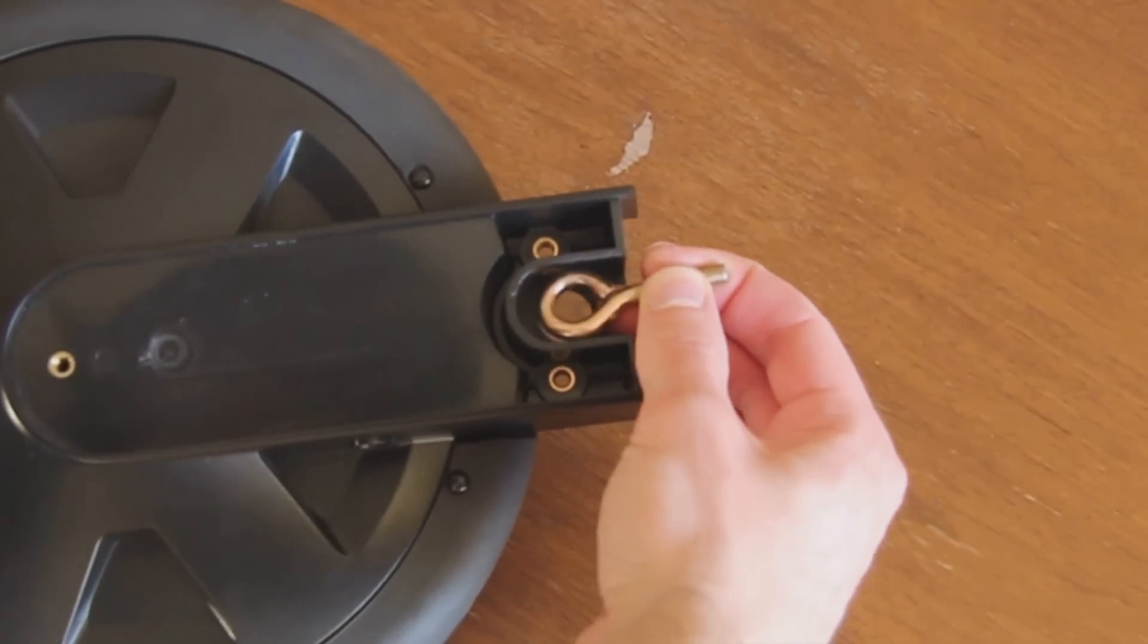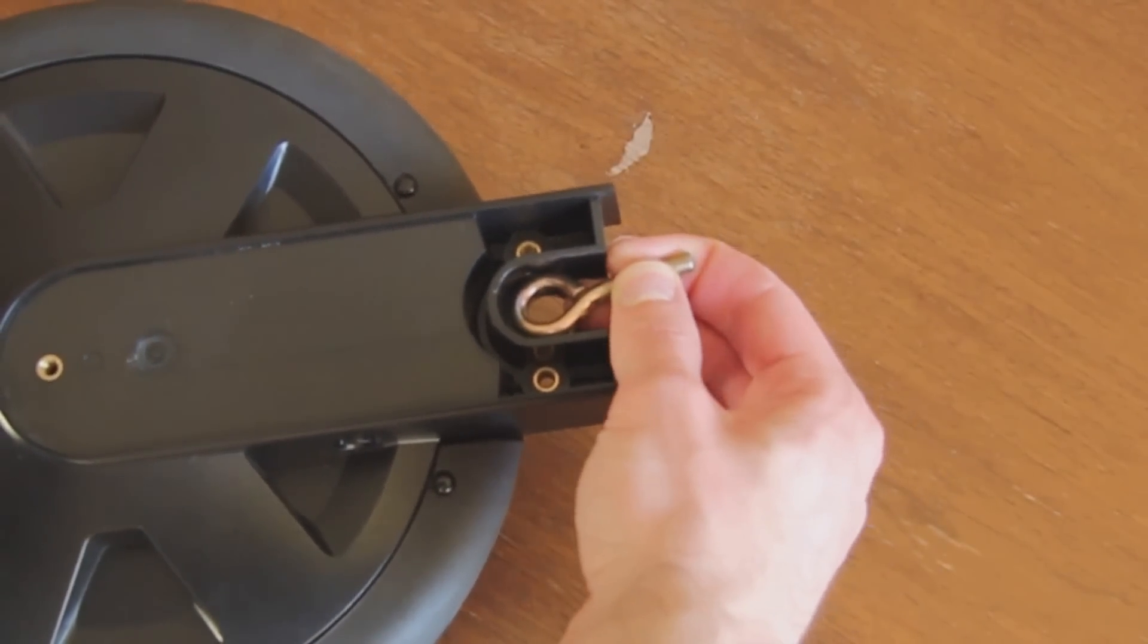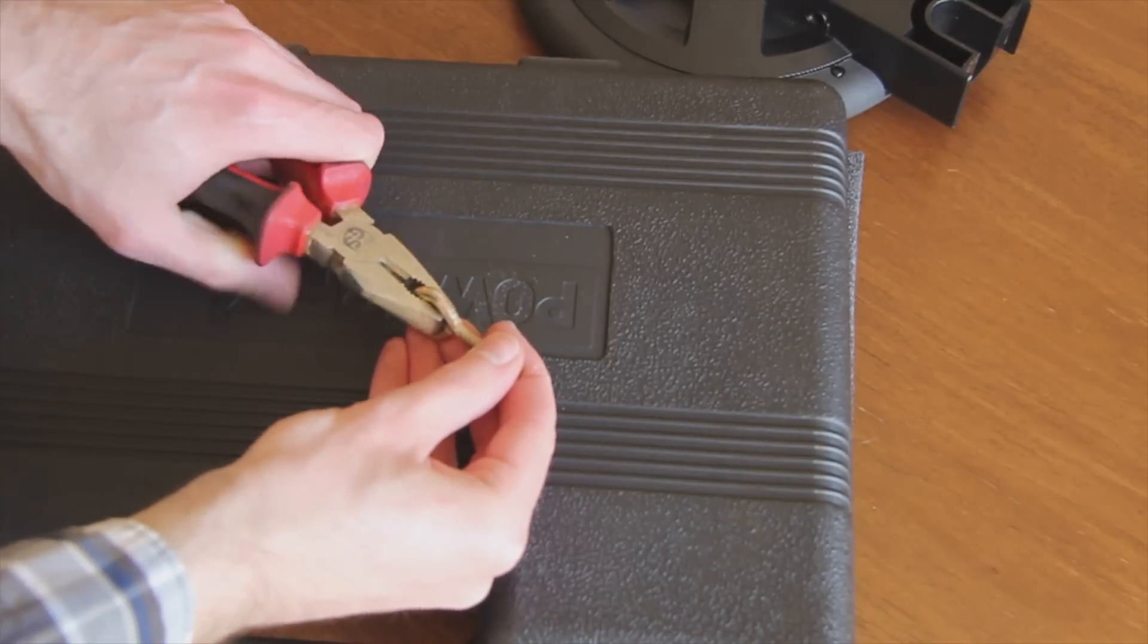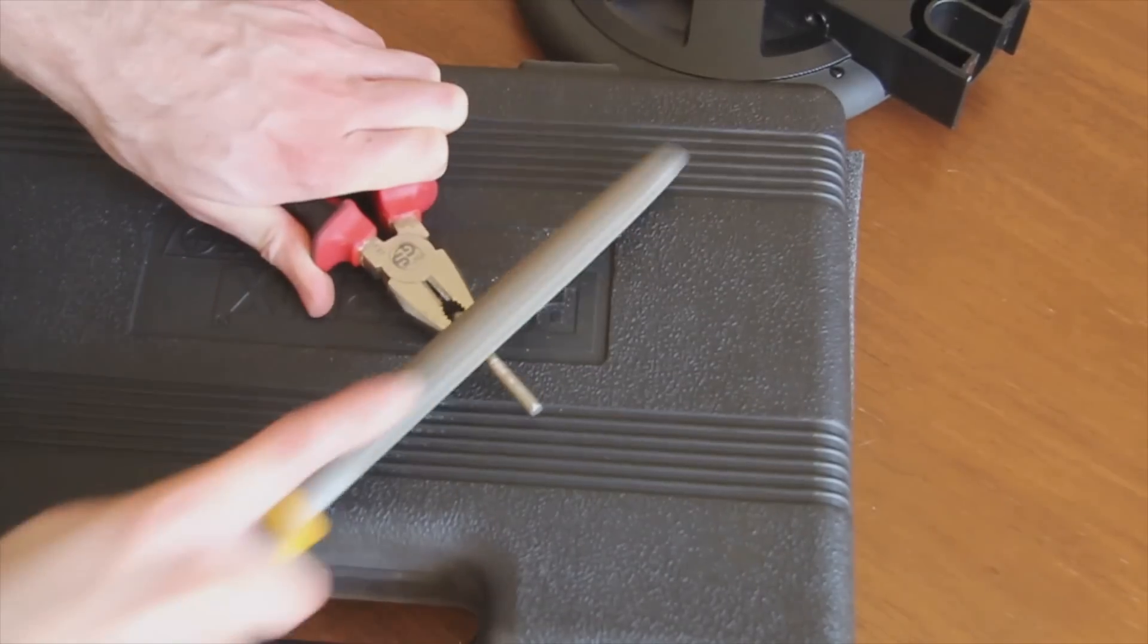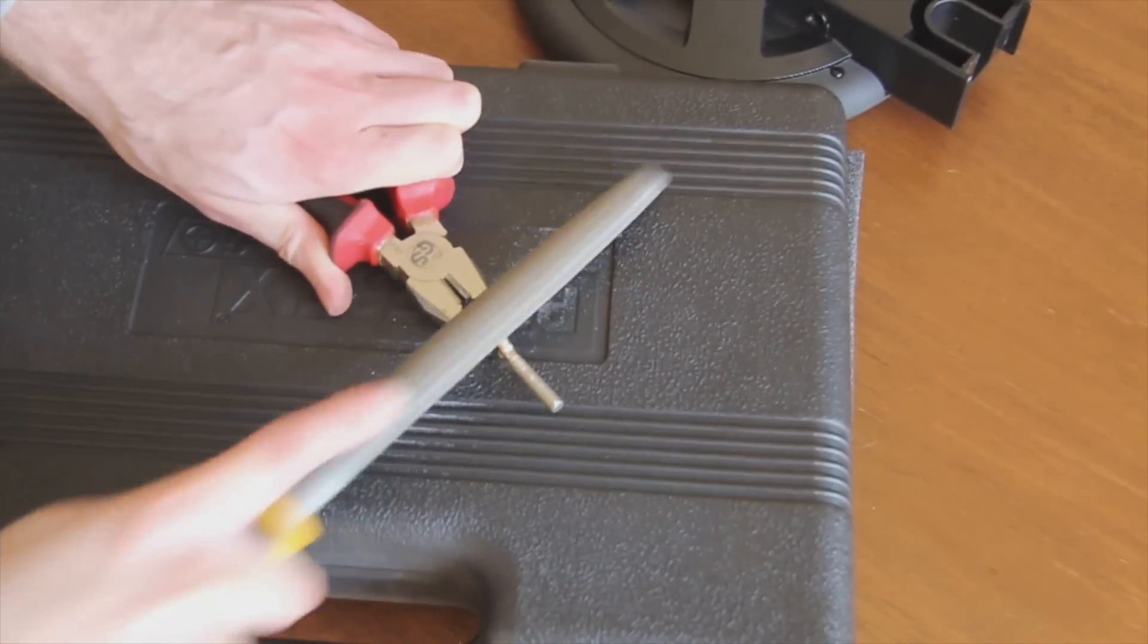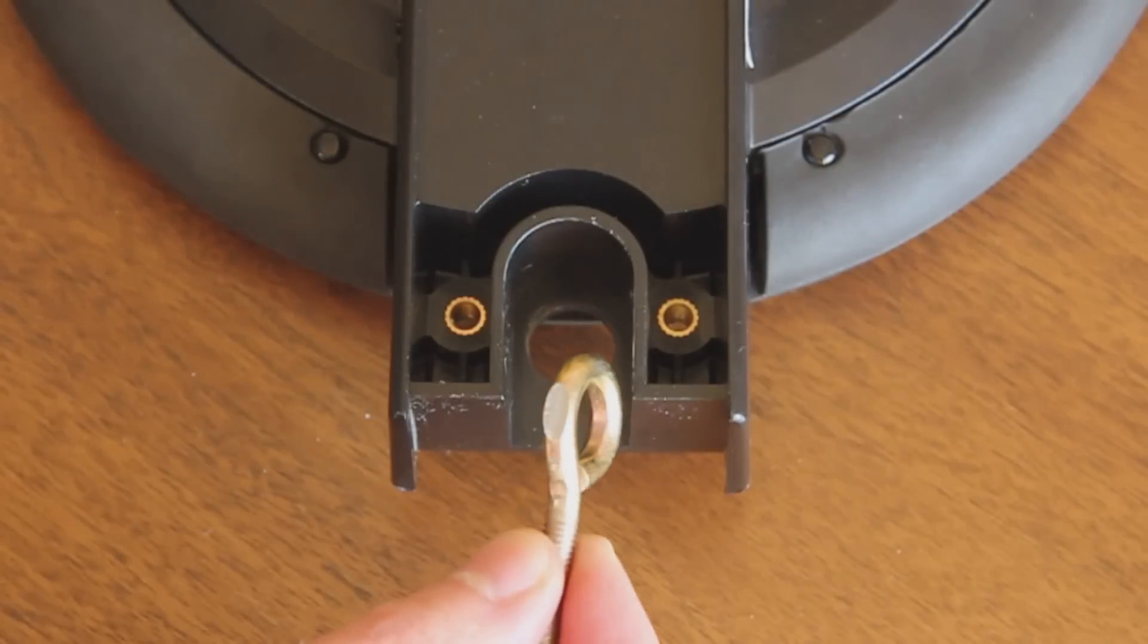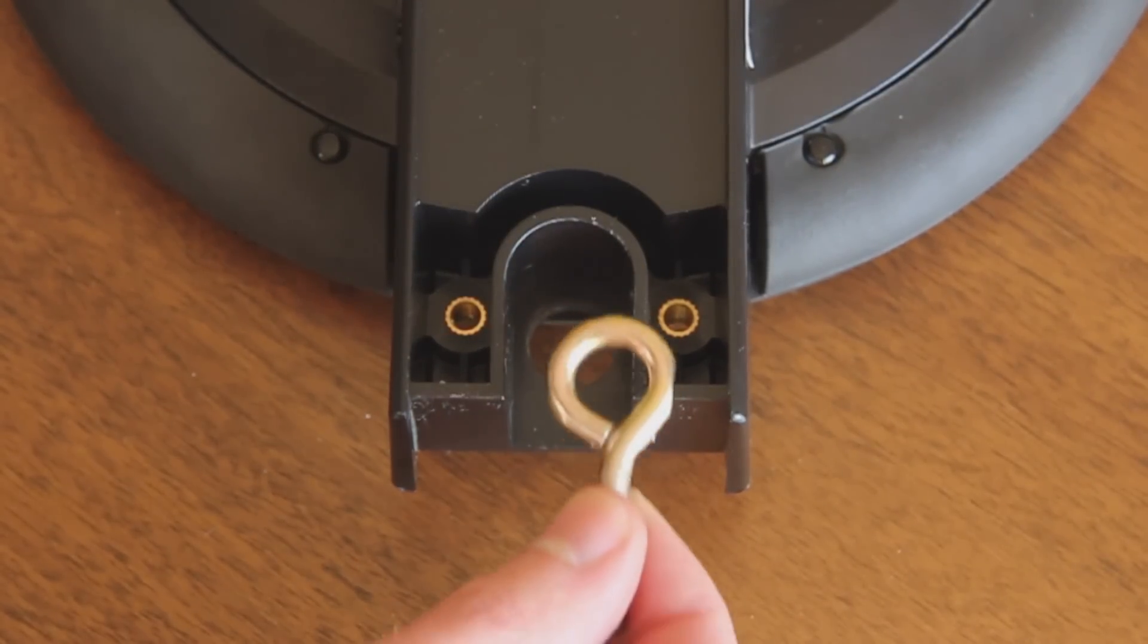The outside dimensions of the screw are still too big to fit in the plastic cage of the pad. Therefore we will use a metal rasp. Remove as much material as necessary. Check if the eye screw matches horizontally in the plastic cage and is still movable.